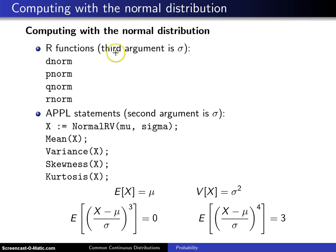In terms of R functions, and keeping in mind that the third argument is sigma, not sigma squared, dnorm will give you the value of the height of the probability density function f of x. So that's what the d indicates out front.